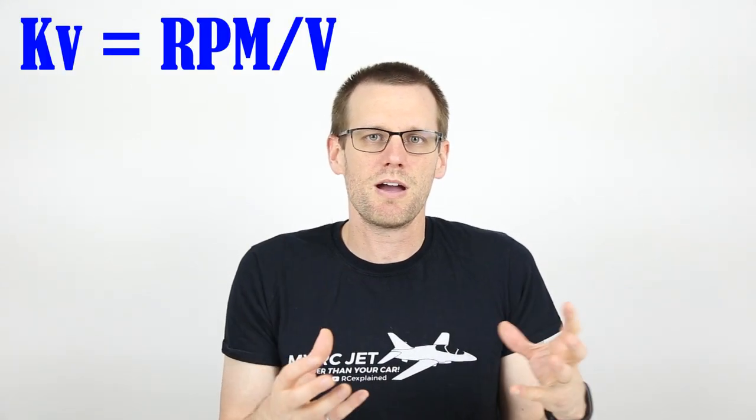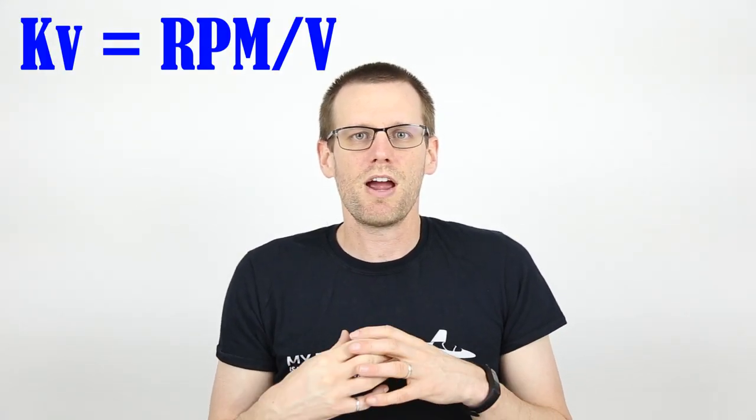So the only real definitions that we have to go through in today's video is our KV value, which obviously represents our RPM that we get out of a motor for every volt that we apply to it. If you don't understand further as to what KV means, I would highly suggest going ahead and searching within this channel, and you will find lots of videos that talk about that very specific topic. Now, our other parameters that we have to define for this week is going to be our voltage value. We're going to do this very quickly and very simplistically.